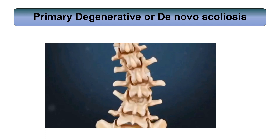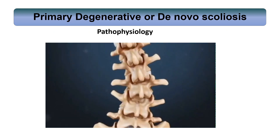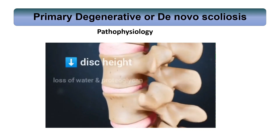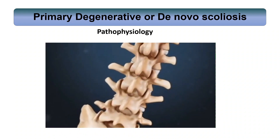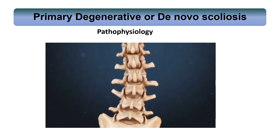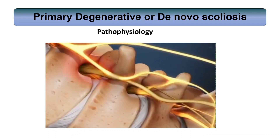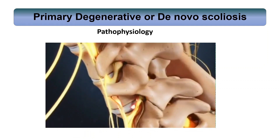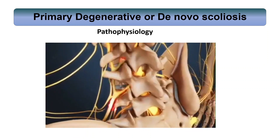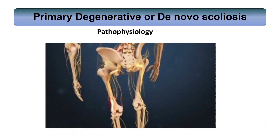Primary degenerative or de novo scoliosis develops after skeletal maturity with a mean age at presentation of 7.5 years. The degenerative process begins with the wearing down of the intervertebral disc, leading to degeneration of the facet joints. When this degeneration occurs faster on one side of the spine compared to the other, an asymmetric collapse develops. Nerve roots exiting the foramina are compressed or inflamed due to degenerative changes such as bony spurs and herniated discs, producing lumbar radiculopathy symptoms of shock-like pain, pins and needles, and/or numbness that can radiate down the buttocks and leg.